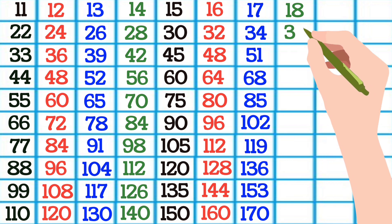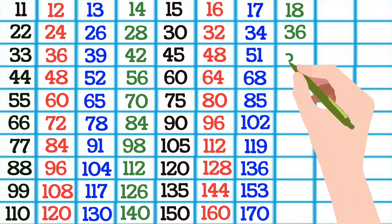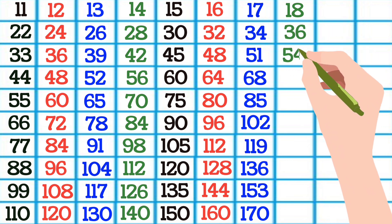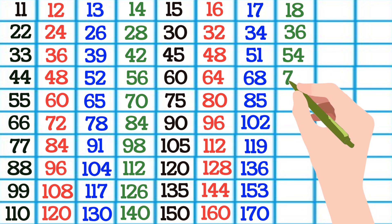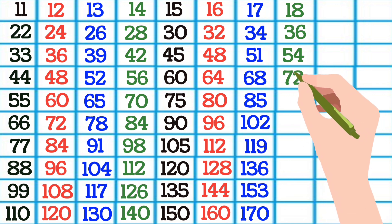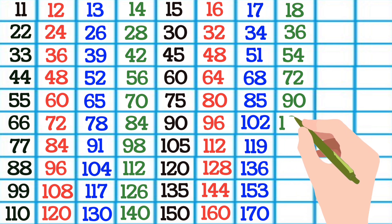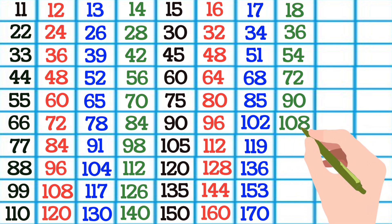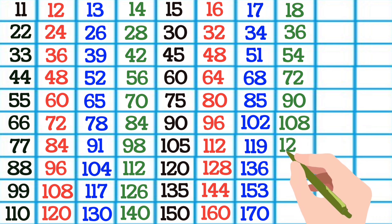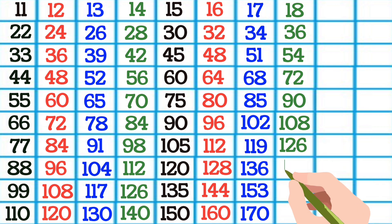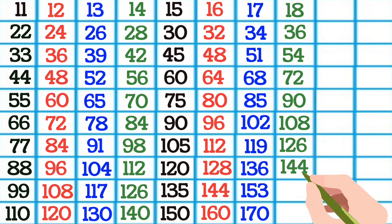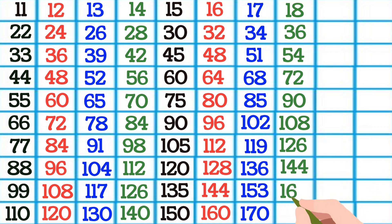18 1s are 18, 18 2s are 36, 18 3s are 54, 18 4s are 72, 18 5s are 90, 18 6s are 108, 18 7s are 126, 18 8s are 144, 18 9s are 162, 18 10s are 180.